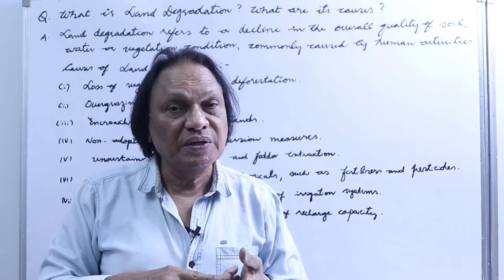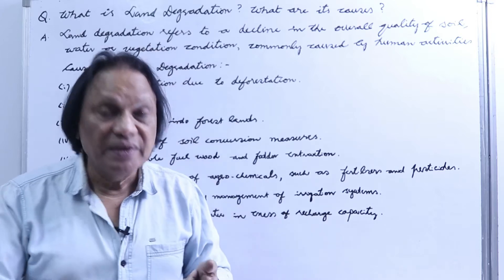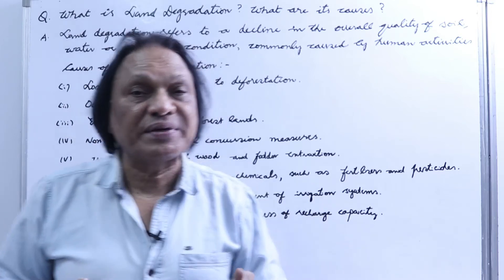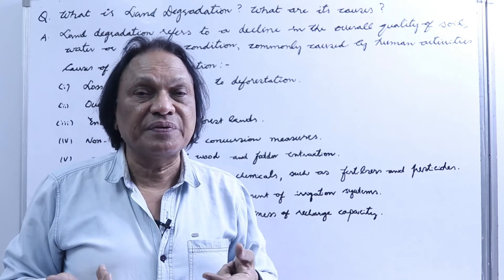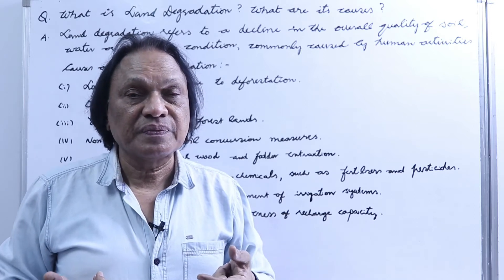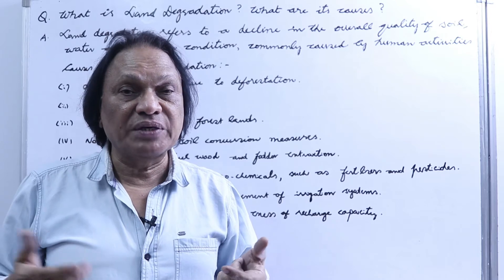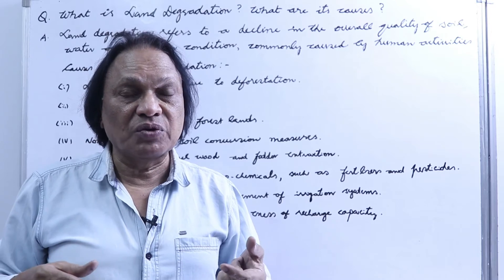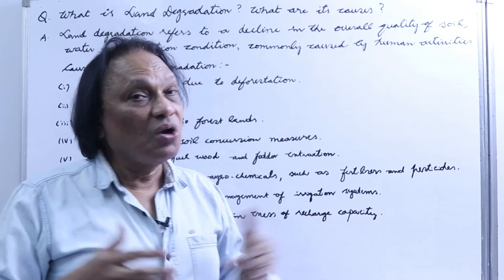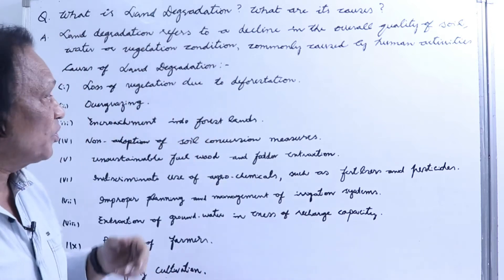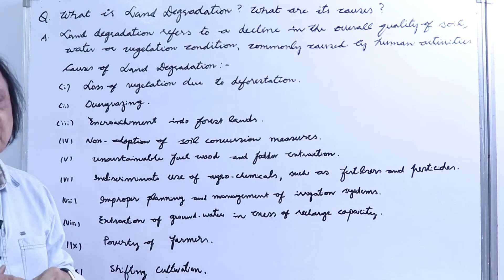Number two: man has started taking out underground water more than what is regenerated. This causes shortage of water and land degradation — the quality of the land comes down. And there are many more points we will discuss. This includes loss of vegetation due to deforestation — we go on cutting the trees, which leads to land degradation, as the forest holds the soil and nutrients.